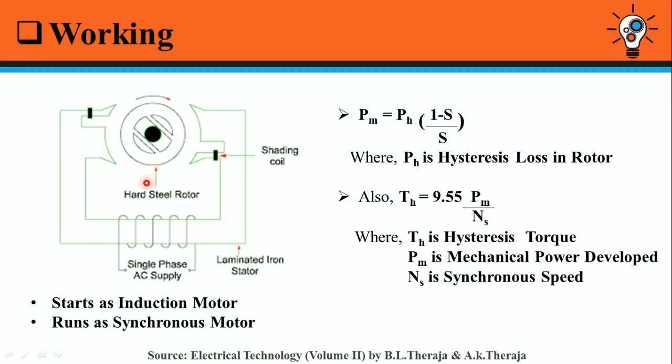If you want to know how the shifting of the magnetic axis actually takes place, watch the working of shaded pole induction motor — I have given the link in the description. The hysteresis motor starts as an induction motor, and after it has reached its maximum speed as an induction motor, the reluctance torque pulls its rotor into step with the revolving field, so that the motor now runs as a synchronous motor by virtue of its saliency.